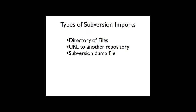Most users of Subversion have files in one of three formats when they first come to Project Locker. You may have a set of files in a directory that you have never put into version control or that you're transferring from another version control system. You might have a URL to another provider's repository or to a repository you were hosting via a web server yourself, or you may have a dump file, which is a Subversion compressed dump of all the information, all the history.